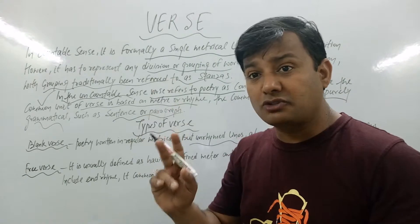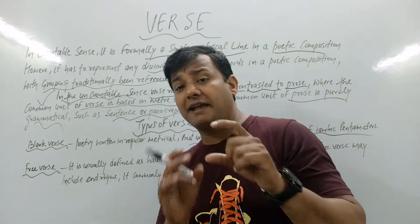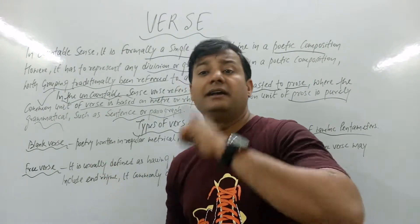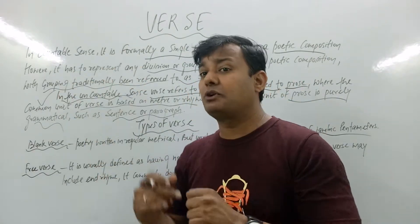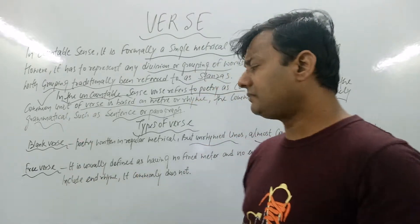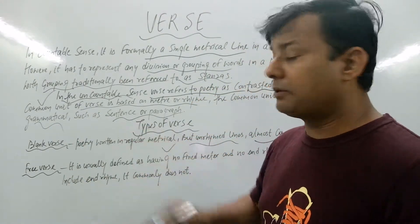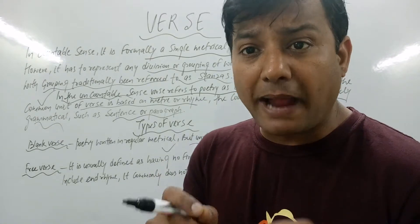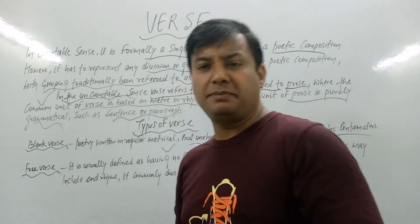A sonnet has 14 lines: first eight lines are the octave and the last six are the sestet — and then there are two short forms: number one the Petrarchan and number two the Shakespearean. The example of blank verse can be found in Milton's 'Paradise Lost.'